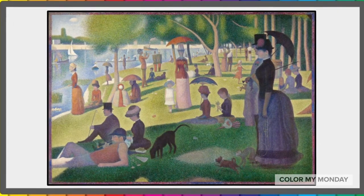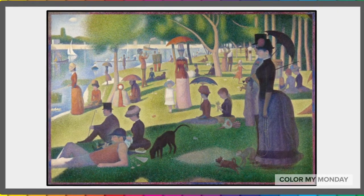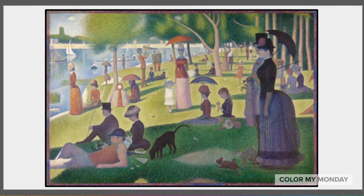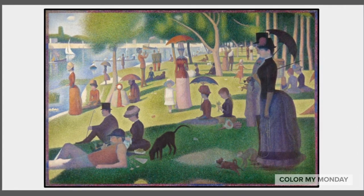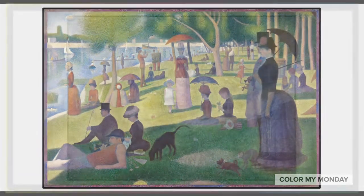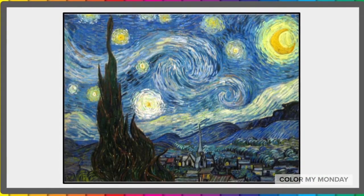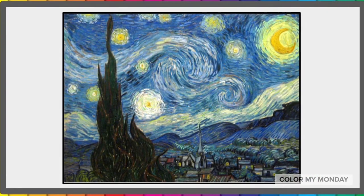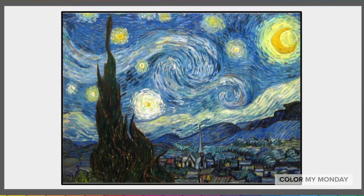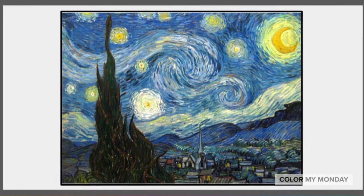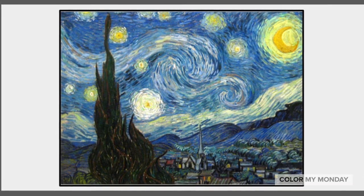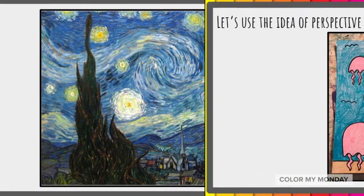Take a look at this famous painting by George Seurat. Notice how objects that are closer to us are larger, and as they move farther away they become smaller. This is another famous painting called Starry Night by Vincent Vengo. It also shows us that the tree closest to us is really big while the buildings are small and farther away.